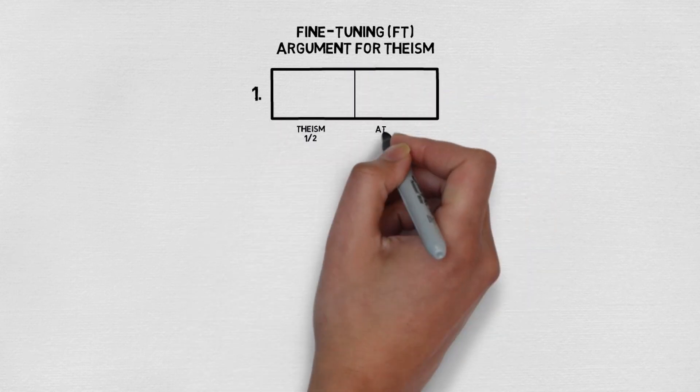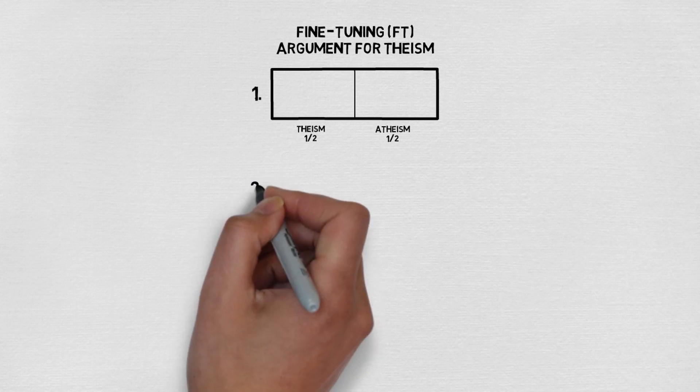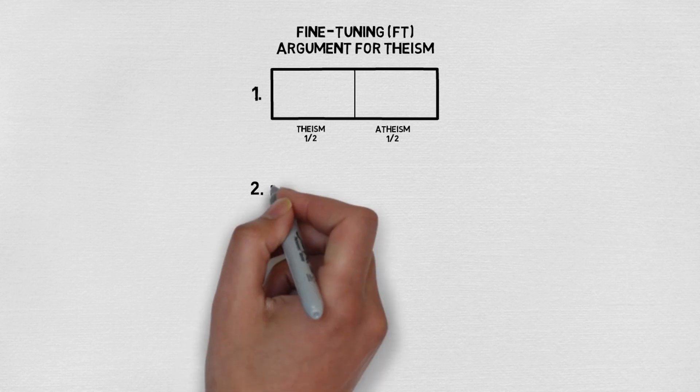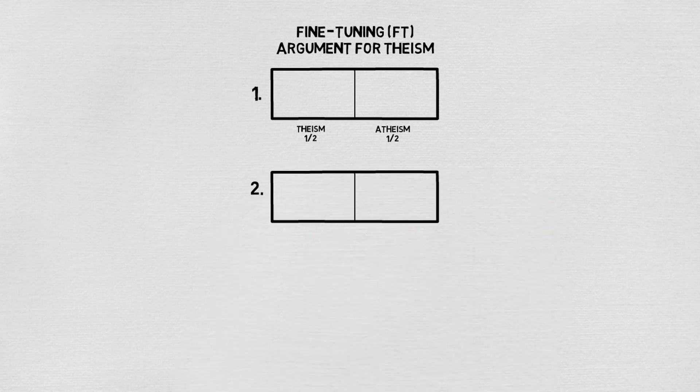So let's draw a bar of a perfect agnostic who is 50-50 that God exists — so half of the bar is for theism and the other half for atheism. Now although you could do all of this on one bar, it's easier to show how it relates to Bayes' theorem if I draw additional bars with extra content on them. So let's draw another bar just the same as the previous one, but this time we're going to add in how likely we think fine tuning is on theism and on atheism.